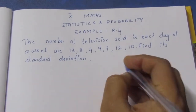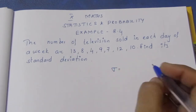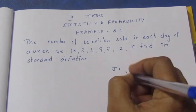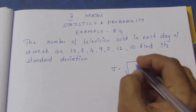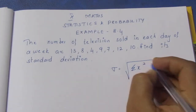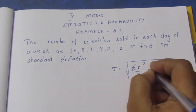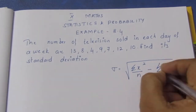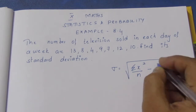Looking at the standard deviation formula: the standard deviation symbol equals the square root of (summation of x² divided by n) minus (summation of x divided by n) whole squared.